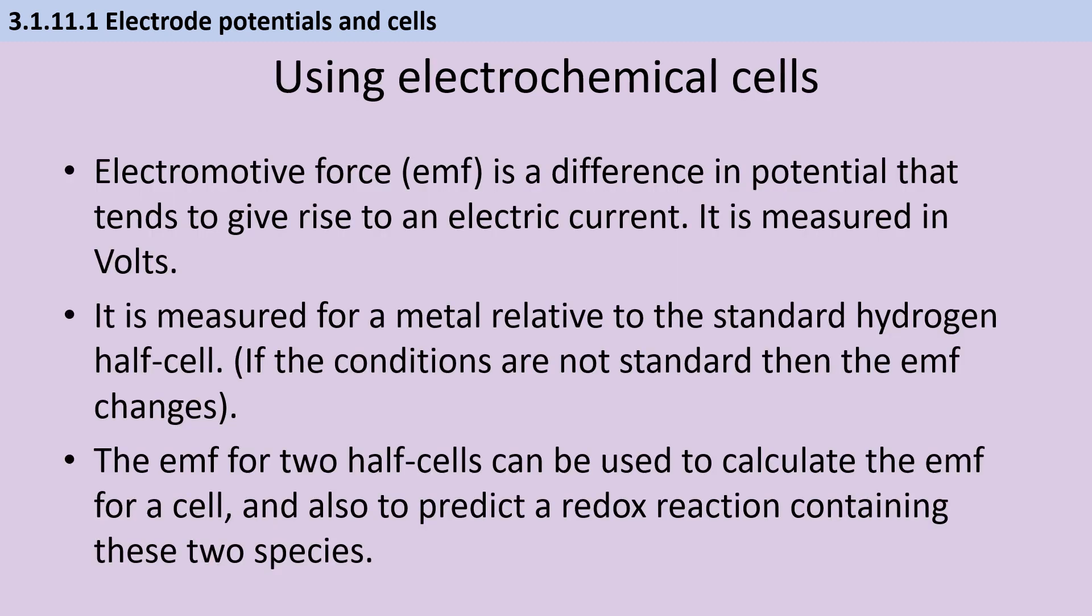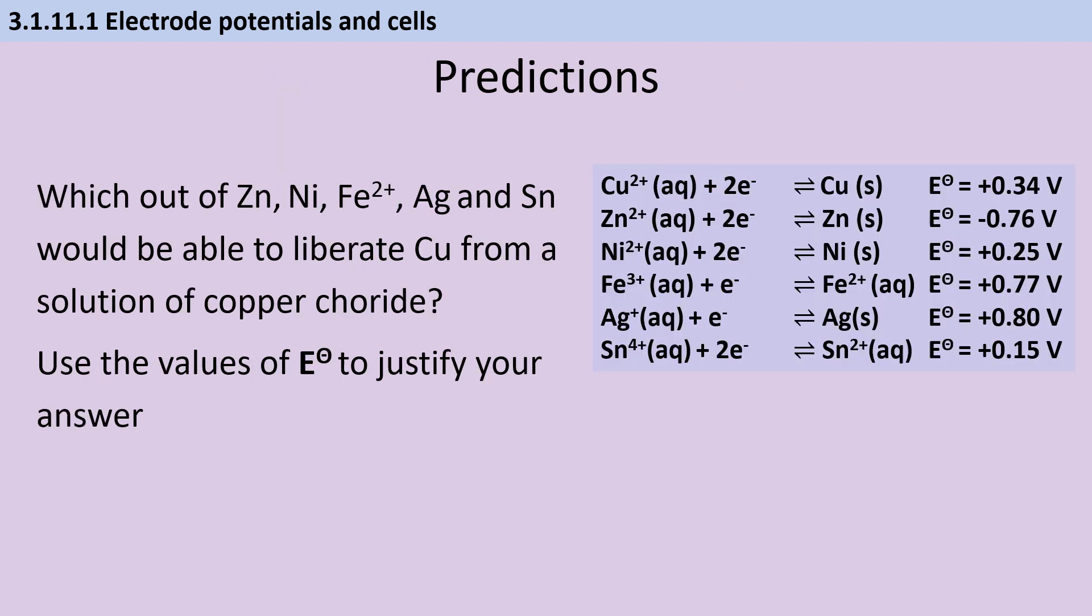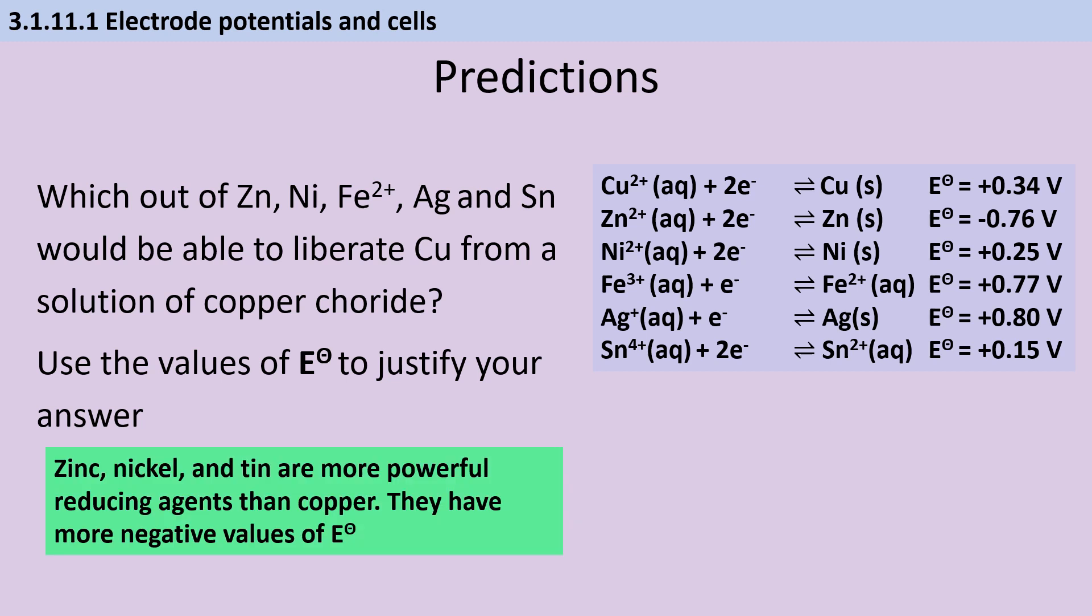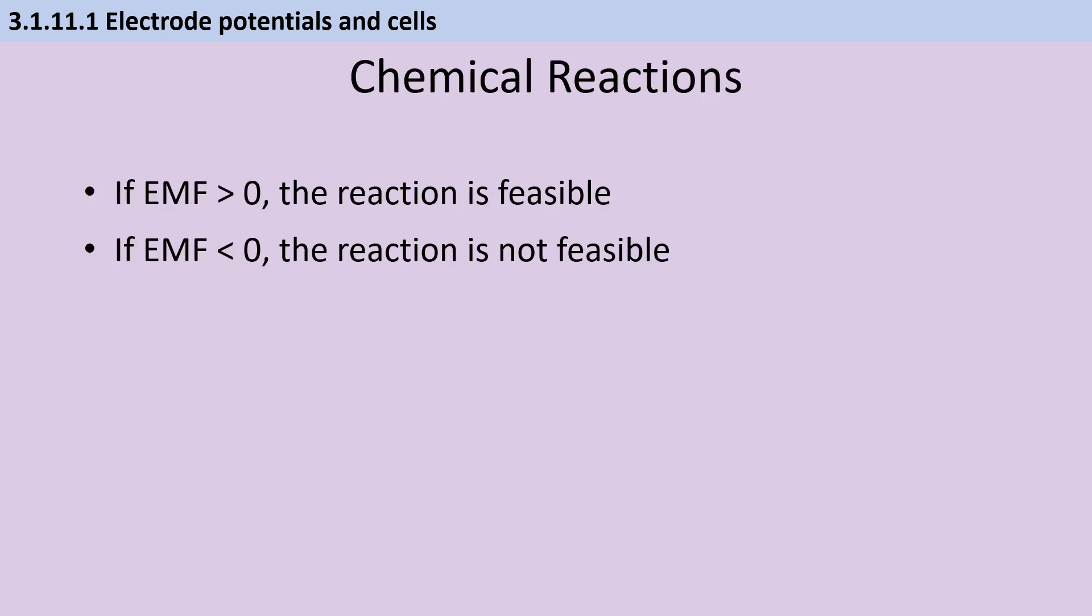In addition to telling us about the utility of a particular chemical cell for generating electricity, calculating electromotive force also allows us to predict whether a redox reaction between two species would proceed. In order for copper to be displaced from solution, we need this first equation to run in the forward direction. In other words, the copper 2+ ions must be reduced. A more powerful reducing agent is going to cause an E-value which is more negative than the value for copper here. So we look at the numbers that are less positive than +0.34, and based on that we can say that zinc, nickel and tin are all more powerful reducing agents than copper. If the overall electromotive force for a cell is higher than zero, then that reaction is feasible, but if it's less than zero, then the reaction is not feasible.